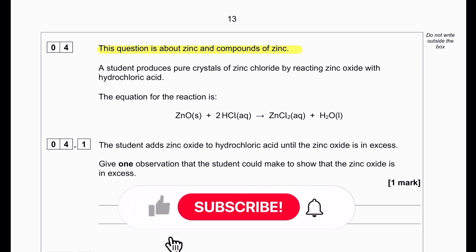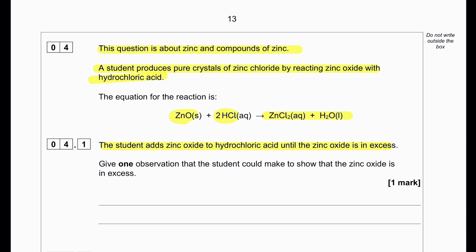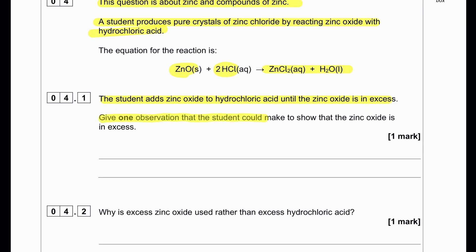This question is about zinc and zinc compounds. A student produced pure crystals of zinc chloride by reacting zinc oxide with hydrochloric acid. Student adds zinc oxide to hydrochloric acid until zinc oxide is in excess. Give one observation that the student could make to show zinc oxide is in excess. When zinc oxide is added to hydrochloric acid, it will react and dissolve. However, when excess is added, zinc oxide will still remain after the reaction.